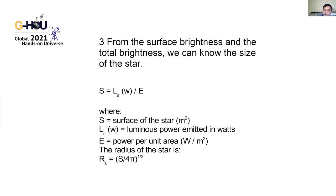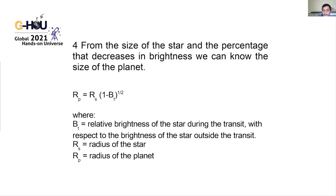Knowing the size of the star and the percentage decrease in brightness during transit, we can determine the size of the planet. If the decrease is very small, the planet will be very small. The decrease in brightness is proportional to the square of the ratio of the planet's size to the star's size.